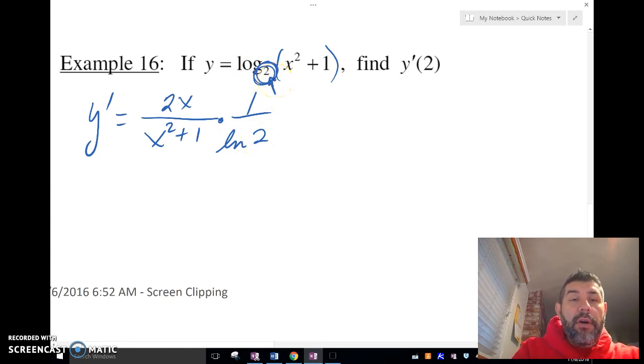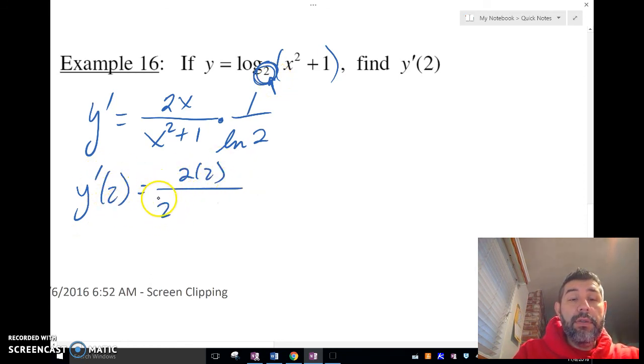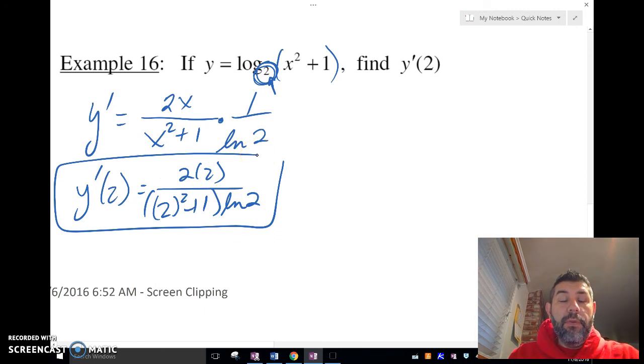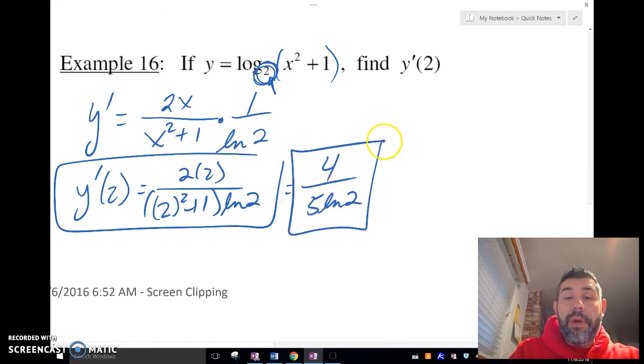Now we've got that, so we're going to go ahead and plug in our 2: 2 squared plus 1 times ln 2, and we're going to call it good. If you want to leave it like that, you can. Remember, there's no need to simplify in this case, but if you want to simplify—maybe you're watching this video for a college course—let me go and simplify that for you. We're going to get 4 over 5 ln 2. Bam, done. All right, there you go guys. Differentiating logarithmic functions. Catch you later. Bye.